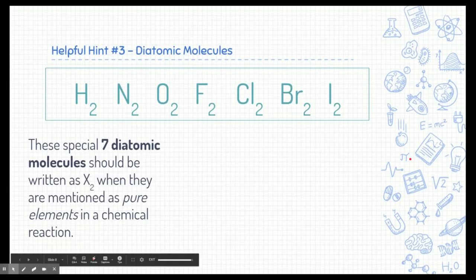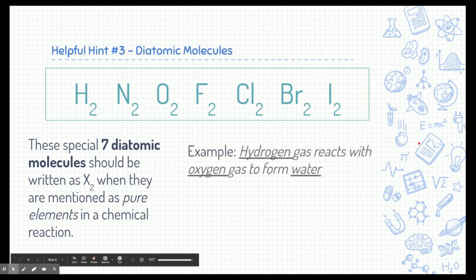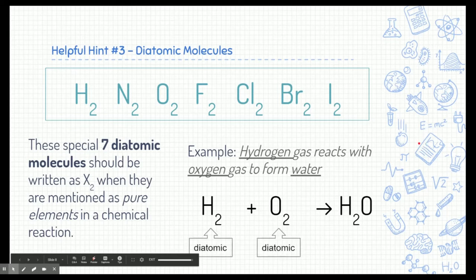The third helpful hint is all about diatomic molecules. We briefly learned about these before — we just wanted you to memorize which molecules were diatomic. You can even use your periodic table and make a little note on which ones are diatomic. These are special molecules that whenever you see them as pure elements in a chemical reaction, they have to have a little subscript of two. Here we have hydrogen gas reacting with oxygen gas to form water. When we write hydrogen, we don't just write H — we write H2 because it's one of the special seven diatomic molecules. Same with oxygen: O2. Water, on the other hand, is not diatomic because it's not a pure element — it's a compound. That H2 in water is not diatomic in that sense, and notice the oxygen doesn't even have a 2, because it's part of a compound.